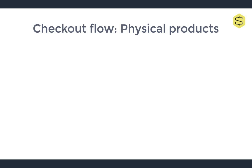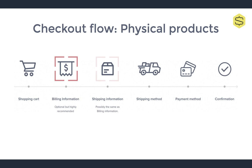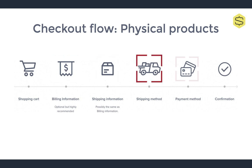So with that out of the way, we can now take a look at what a standard checkout flow should look like for physical products, and later on, a simplified flow for digital products. When you're selling physical products, your checkout flow is typically divided into six steps: the shopping cart, which we covered in part one; billing information; shipping information; shipping method; payment method; and confirmation.